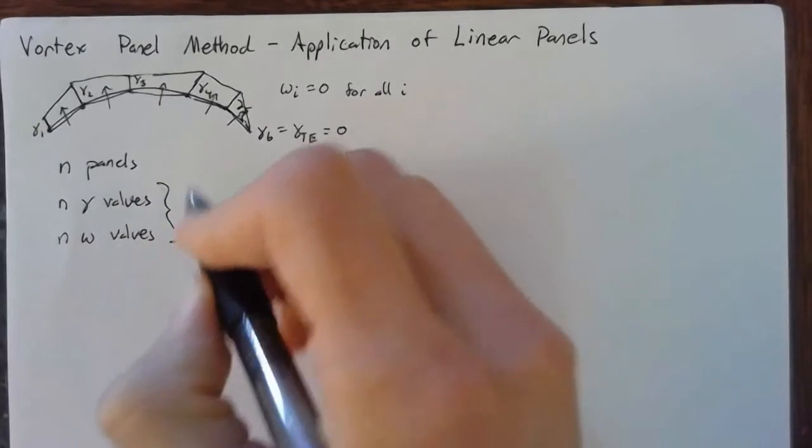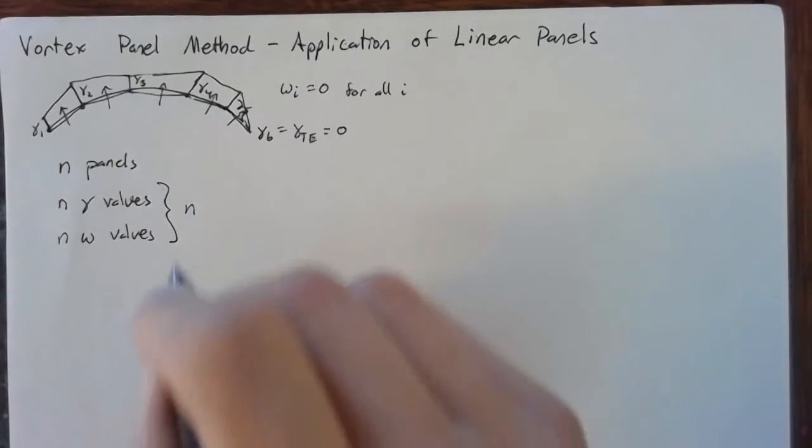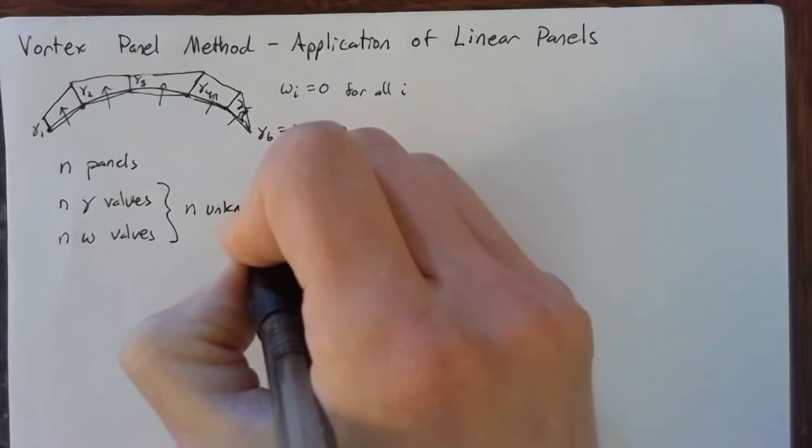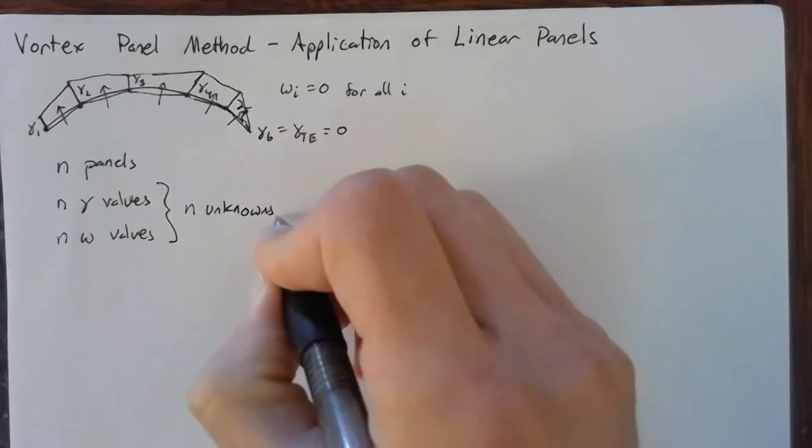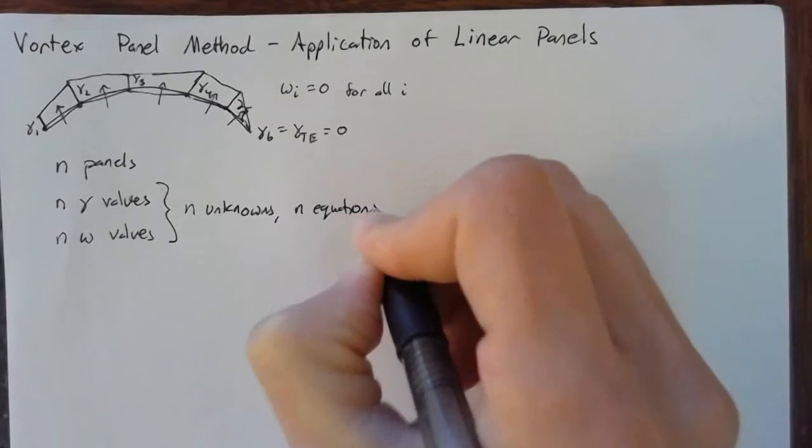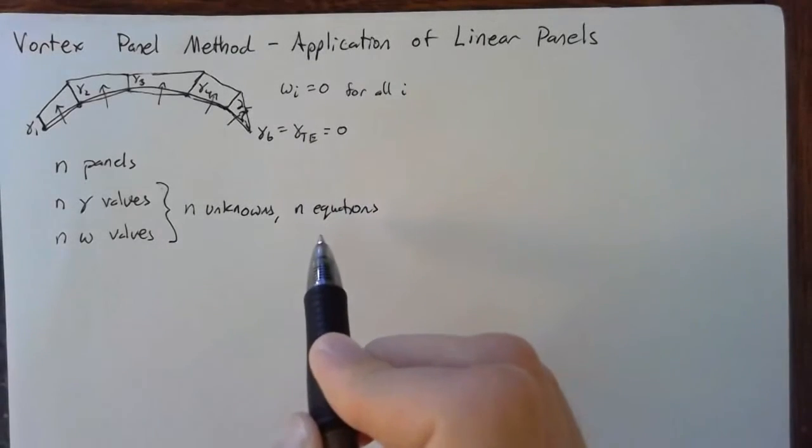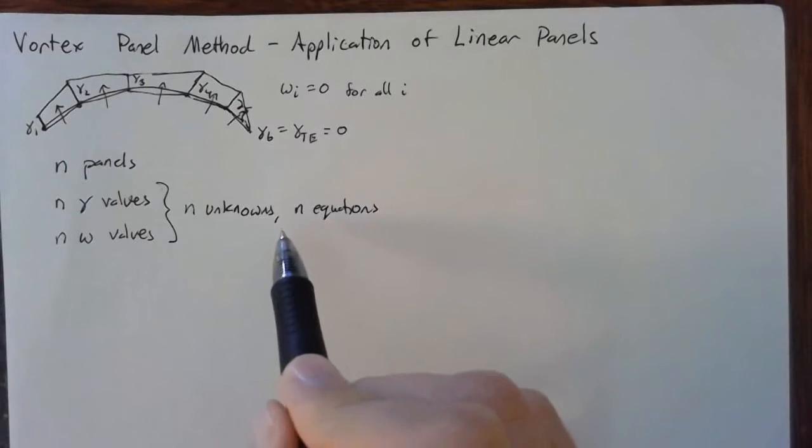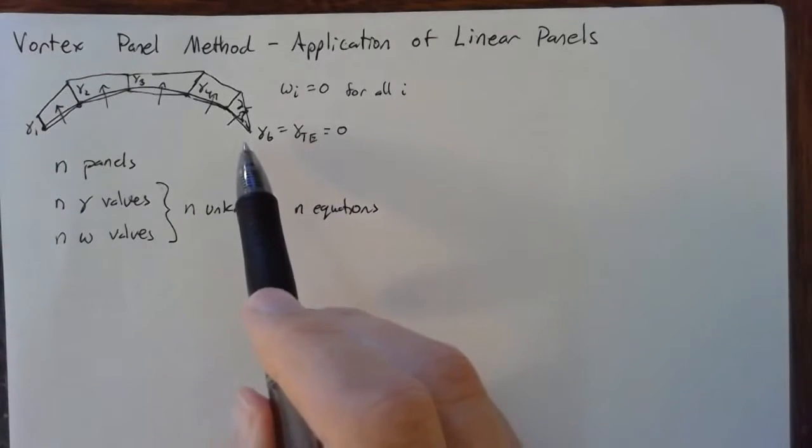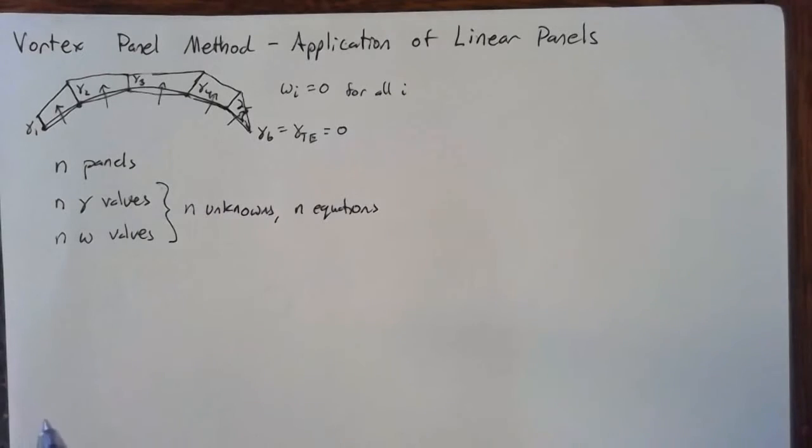What this leads to is a system of equations where we have n unknowns, or n gammas, and n equations. So this is a system of equations that we can solve without any other assumptions or having to neglect any of our upwash values, like we did for our constant panel case.